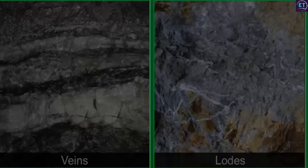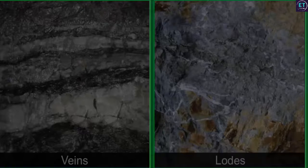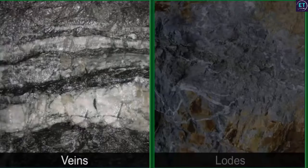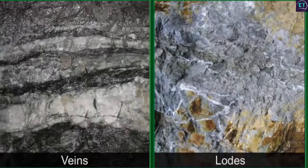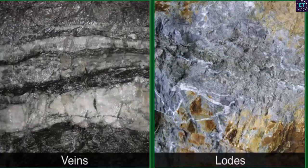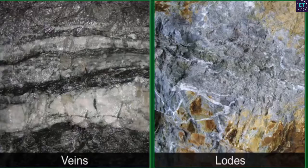If we go digging in igneous or metamorphic rocks, we will find minerals as minor deposits called veins or bulky thick deposits called lodes. These veins and lodes form when molten minerals are pushed up into crevices between rocks. Most metallic minerals like copper, zinc, lead and tin are found in such formations.